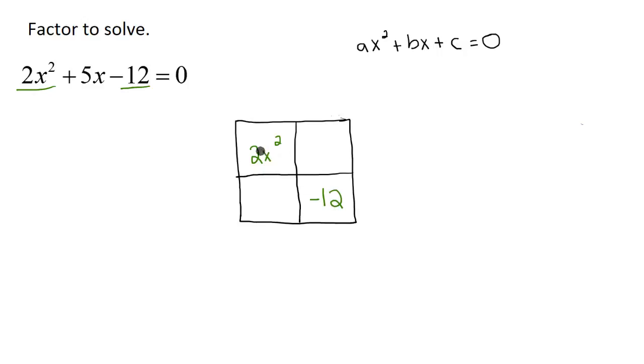My next step is to take the ax squared term right here and multiply it by my constant term right here. I'm going to put that down here. This is going to be a negative 24x squared.